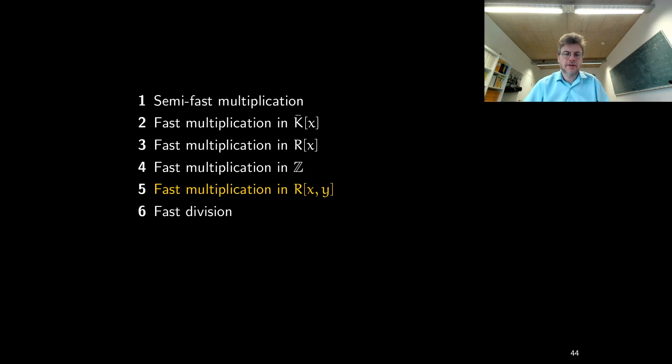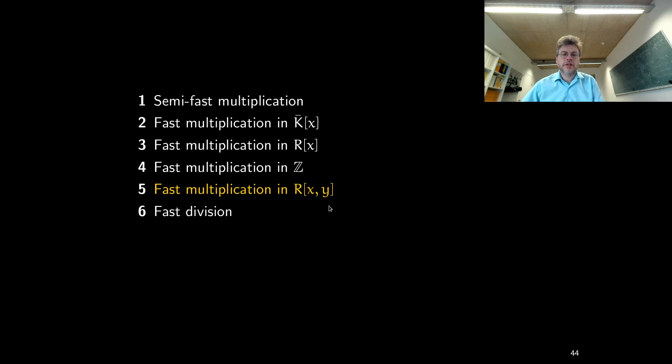With this finite-field approach, you get n log n performance by doing the computation three times and then combining the coefficients. For very large n you may need more than three times, but for every reasonable n, three times is enough. So in practice, we get an n log n performance. Then in the other direction, we discussed polynomial multiplication in polynomial rings with several variables.